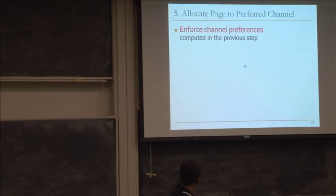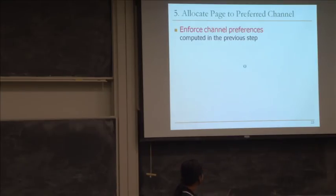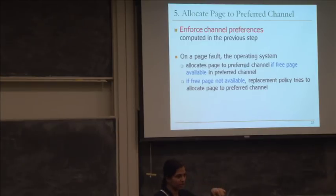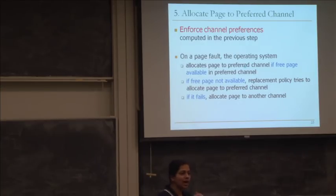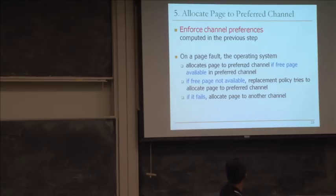The last part is how to enforce the allocation — allocating pages to preferred channels. On a page fault, the operating system tries to allocate the page to the preferred channel if there's a free page available. If not, it uses a replacement policy that preferentially finds a page in the preferred channel. This is not a hard partitioning mechanism — you don't strictly allocate only certain data to certain partitions, which would cause thrashing if you ran out of space on your partition.